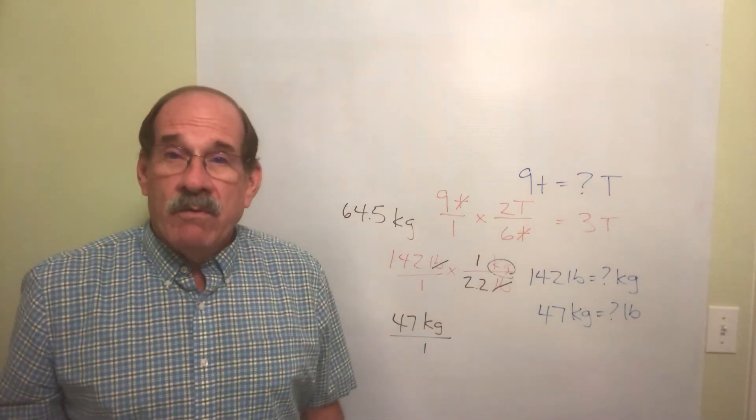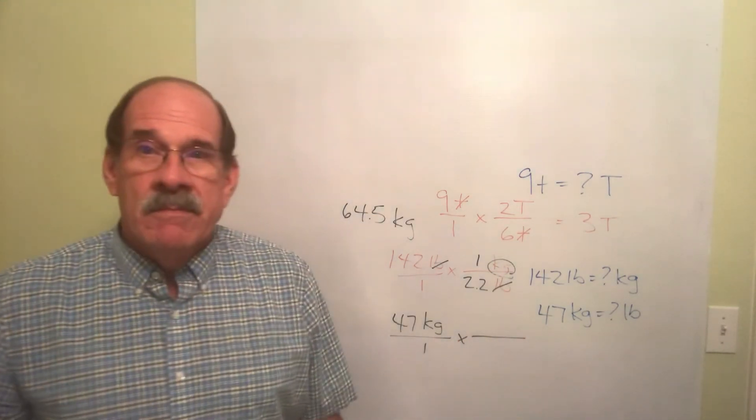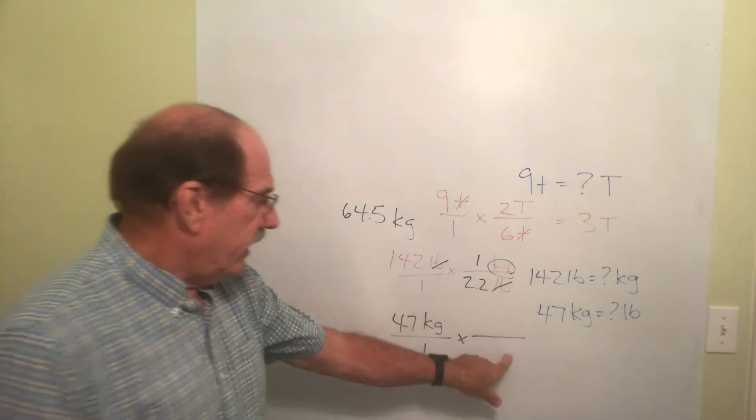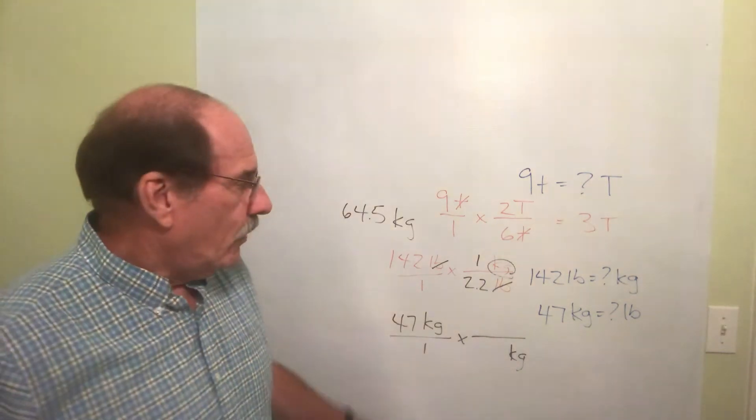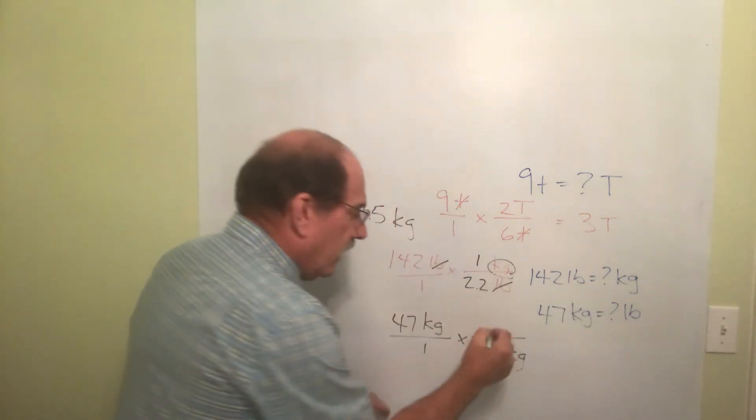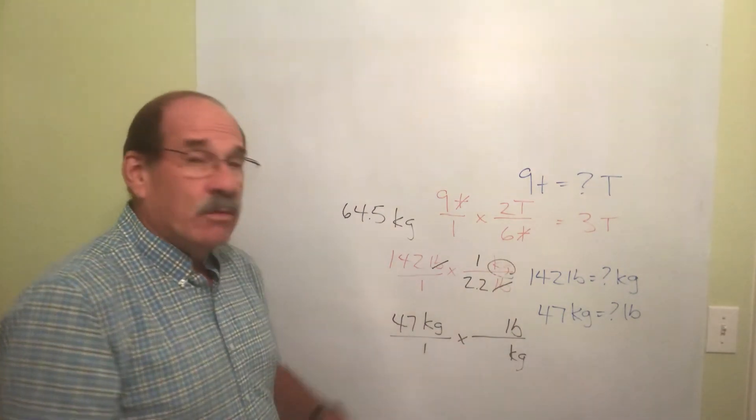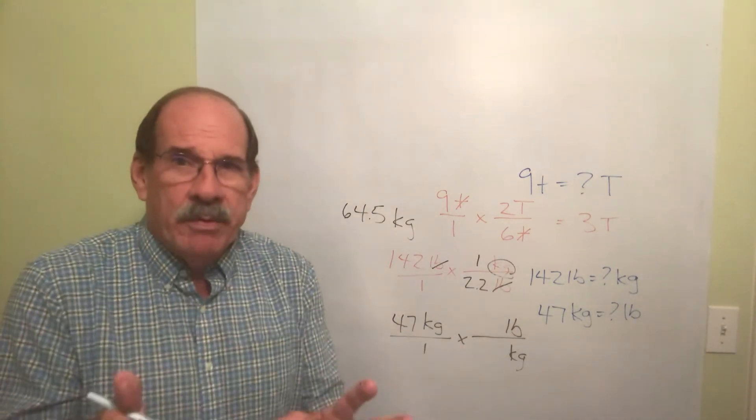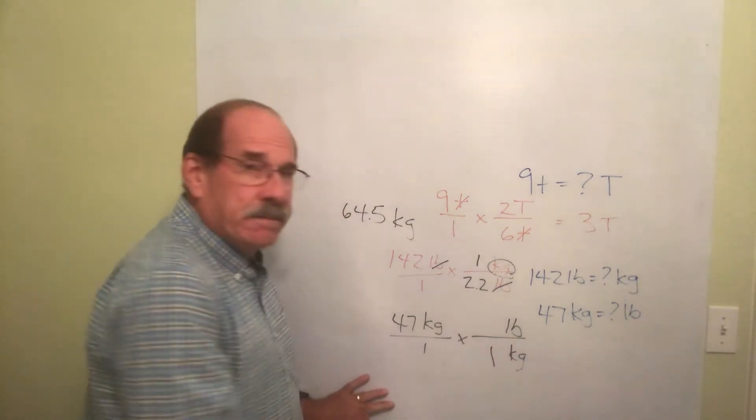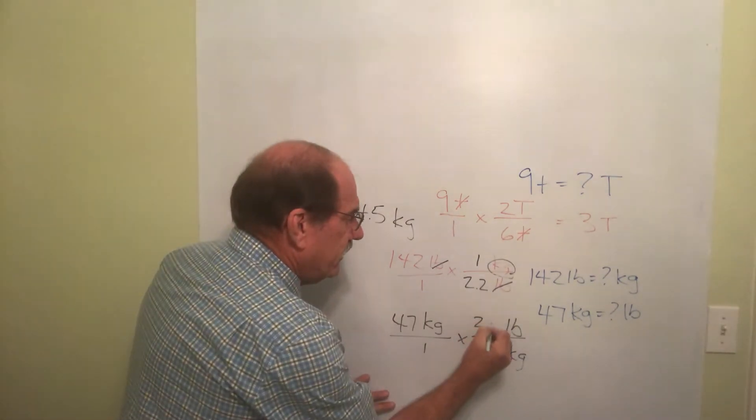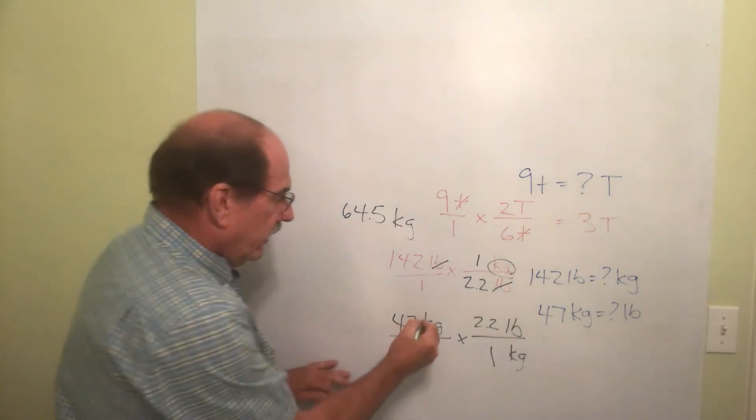So what I know: 47 kilograms. What I know goes over one. Make another fraction and put what's up here down here. Kilograms goes down there, what I'm looking for, pounds, goes on the top. And how do pounds and kilograms compare? Well, in this case, the same numbers, but they're in a different spot. I know that one kilogram is the same thing as 2.2 pounds. Kilograms will cancel out.